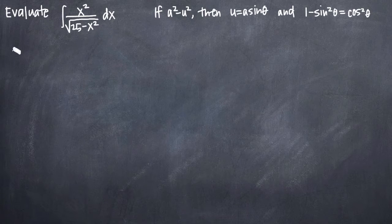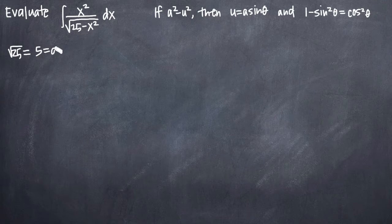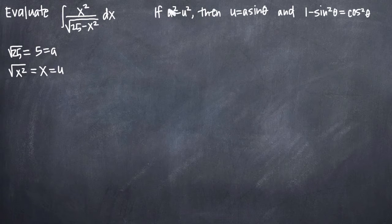If we say that 25 minus x squared is equal to a squared minus u squared, then in order to solve for a and u, we just take the square root of 25. That gives us 5, and so we know that 5 is equal to a. To find u, we just take the square root of x squared — we get x — and we say that x is equal to u.